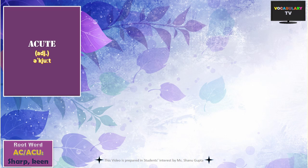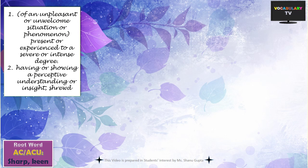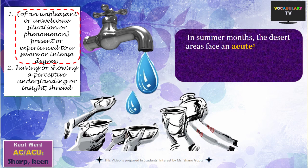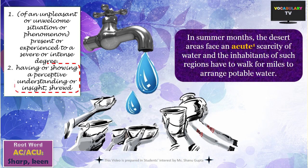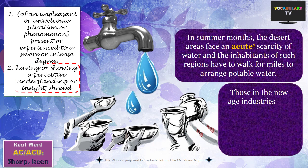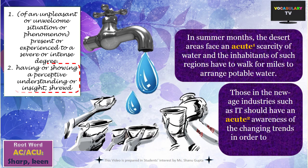Another important word based on the root ACU is ACUTE. Something that is acute is sharp, keen, or severe — generally used for an unpleasant or unwelcome situation present or experienced to an intense degree. For instance, in summer months, desert areas face an acute scarcity of water and inhabitants have to walk miles to arrange potable water. The word can also describe sharp insight: those in new-age industries such as IT should have an acute awareness of changing trends to have a viable career.